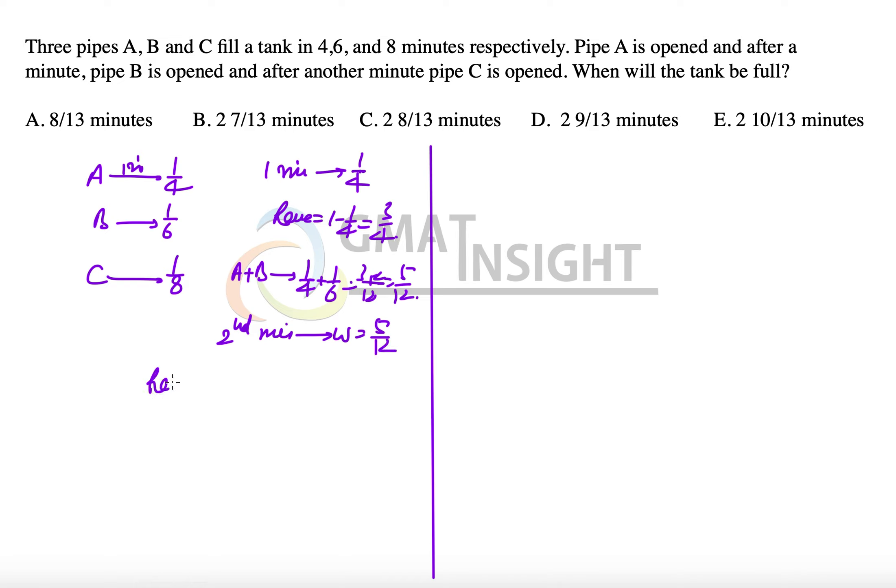And now let's calculate the remaining work once again. So we had 3/4 work left, out of which 5/12 work is being done here. That means we have 4/12 work, which is 1/3 work remaining.